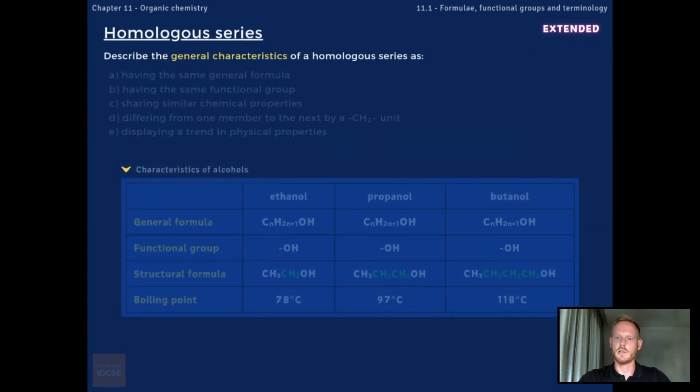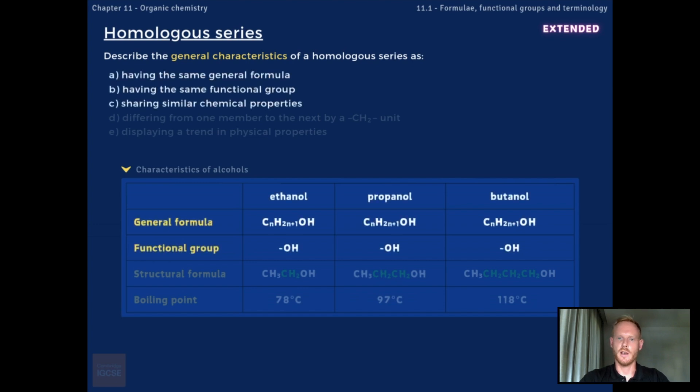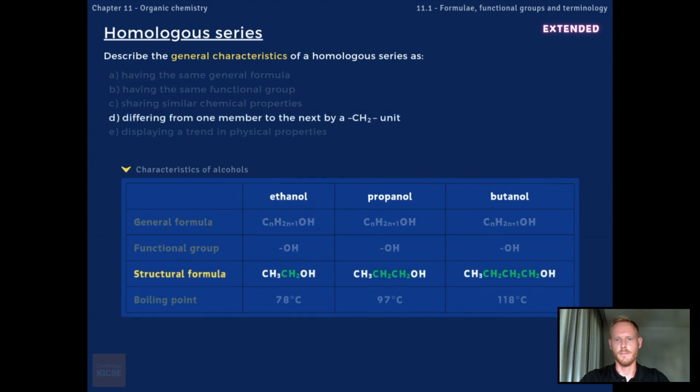So, all members of a homologous series have the same general formula, the same functional group, and similar chemical properties. Adjacent members of a homologous series differ from one another by a single CH2 unit.